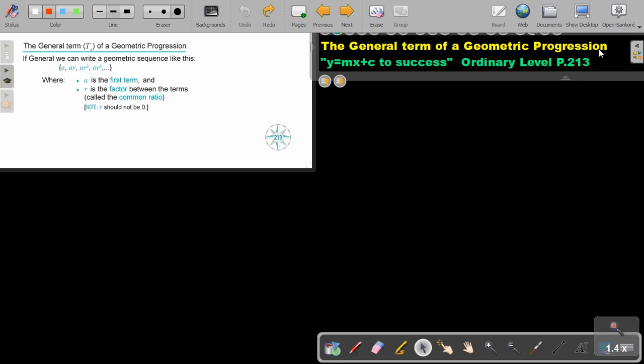The general term of a geometric progression. You will find this on page 213 in the Namibia Ordinary Level Mathematics textbook, y equals mx plus c to success. In general we can write a geometrical sequence like this: a, ar, ar square, ar to the power of 3, where a is the first term and r is the factor between the terms called the common ratio.